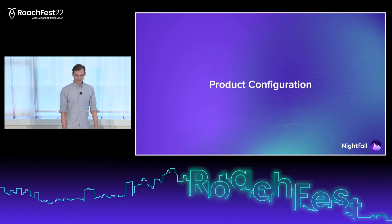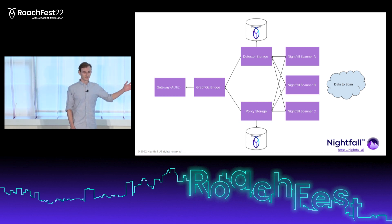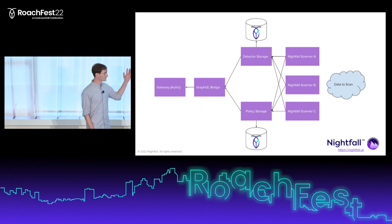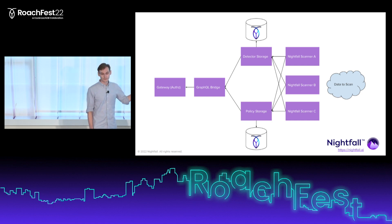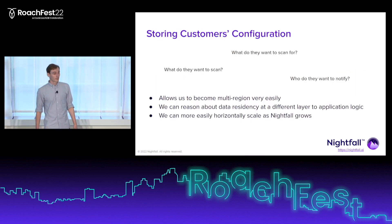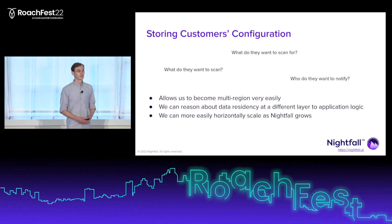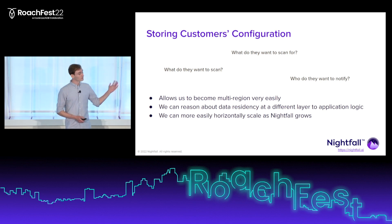Let's first talk about product configuration. This was the first thing we introduced Cockroach for at the company. We have all these detectors, inclusions, exclusion rules, and outcomes to manage, and we use Cockroach for all of that. This is a simplified diagram of what we do. We store the detectors — what has been configured — and the policies — what we should do — in two different Cockroach data stores. The users configure them through our UI via GraphQL. That's pretty much the only writes that happen on these databases. However, all of the scanners interact with them extremely frequently with a lot of reads. They need to know what to scan for and what to do when they find something.